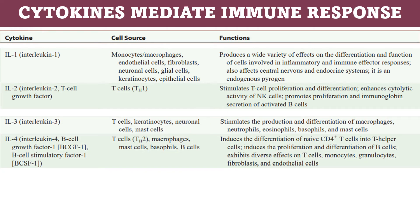Interleukin-3 cell sources include T cells, keratinocytes, neural cells, and mast cells. Its function is to stimulate the production and differentiation of macrophages, neutrophils, eosinophils, basophils, and mast cells. Interleukin-4, also known as B cell growth factor, has sources including T helper cells, macrophages, mast cells, basophils, and B cells.